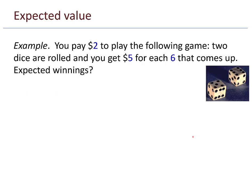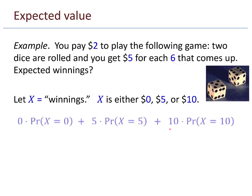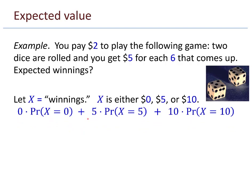Here's an example. Suppose you pay $2 to play the following game: two dice are rolled, and you get $5 for each 6 that comes up. What is your expected winnings? Every time you play, how much money do you expect to get back? Let X, our random variable, be winnings. The experiment is rolling this pair of dice, and the winnings you can get back are either 0, 5, or 10. So the expected value of X is 0·Pr(X=0) plus 5·Pr(X=5) plus 10·Pr(X=10).